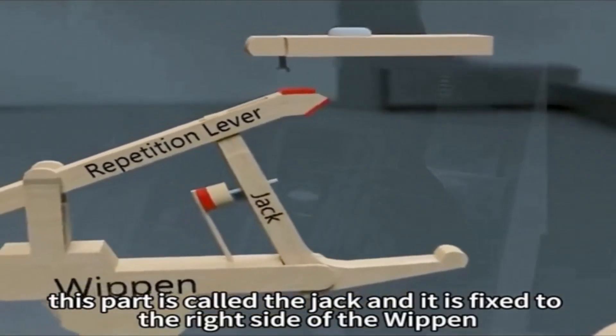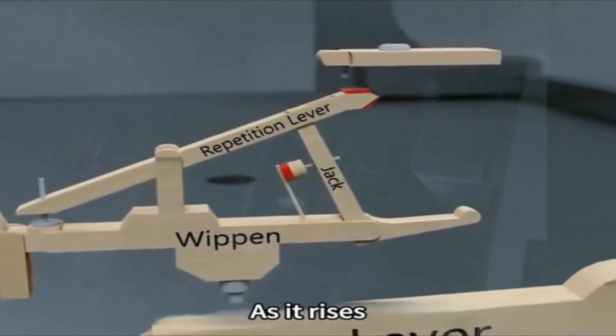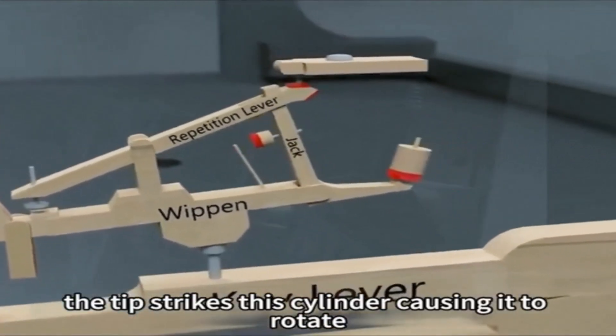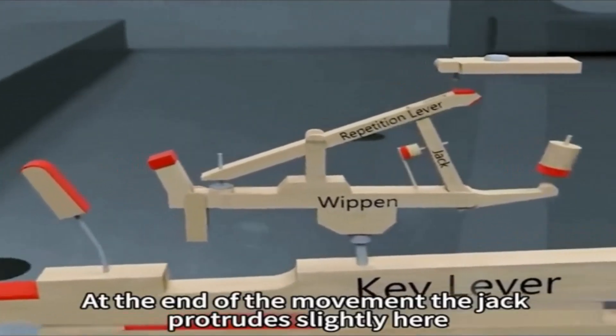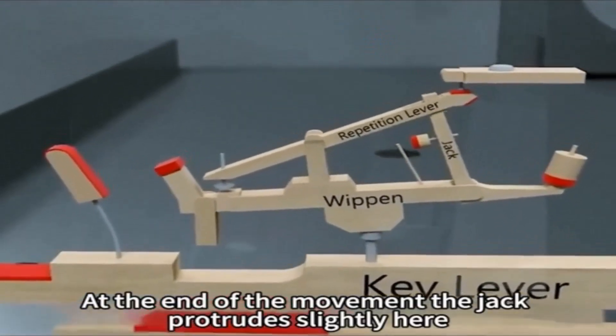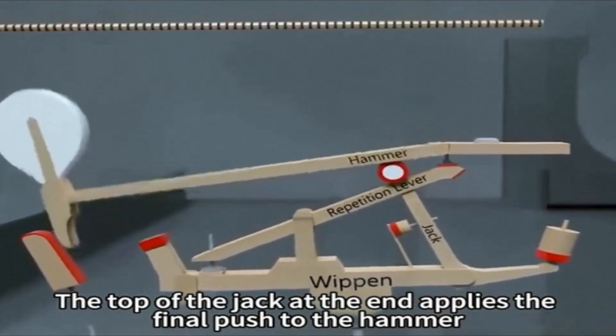This part is called the jack, and it is fixed to the right side of the whippen. As it rises, the tip strikes this cylinder causing it to rotate, and then another rod holds this part in place. At the end of the movement the jack protrudes slightly here. The top of the jack at the end applies the final push to the hammer.